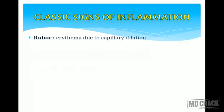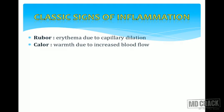What are the cardinal signs of inflammation? Rubor refers to erythema due to capillary dilatation — the inflamed area always appears reddish in color. Calor is increased warmness due to increased blood flow; when you feel the inflamed area, the temperature is increased. Tumor refers to edema — do not confuse it with neoplasia. The inflamed area will always be edematous.